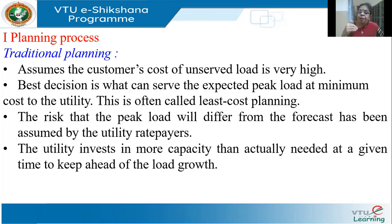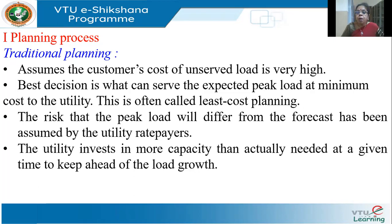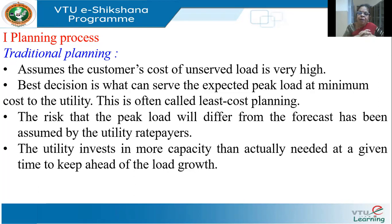How does the utility plan? They look at what is the maximum demand on the system. This demand varies throughout the day — you have all studied about the load curve. There is a peak power demand, say between 12 noon to 5 pm, which may be around 700 megawatts. And the average demand over a 24-hour period may be say 500 megawatts.